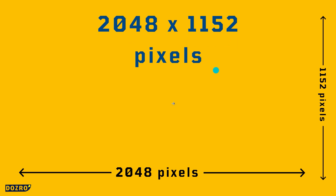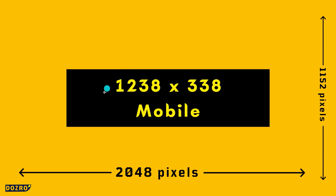The dimensions of this YouTube banner image are 2048 by 1152 pixels. For responsive display on mobile screens, the safe area for a YouTube banner is 1238 pixels wide and 338 pixels tall.